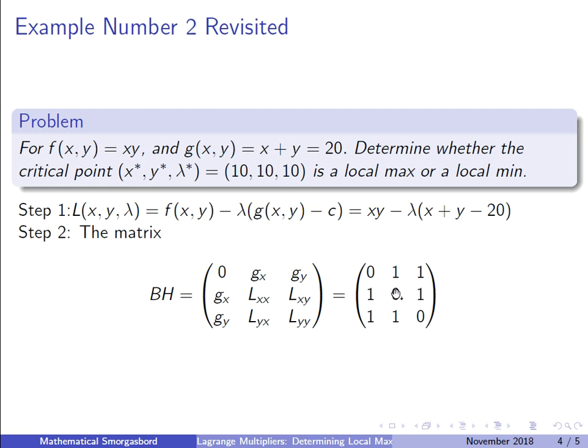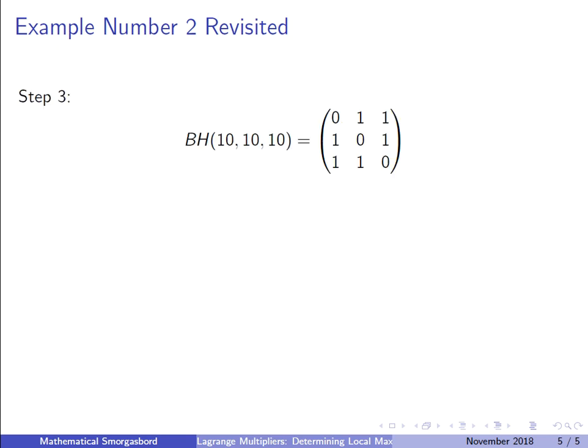Many times you'll get some function in terms of lambda, maybe over here and over here, so it won't always just be constants. Now step three: we actually evaluate this matrix at the point (10, 10, 10). What I mean is you treat each of these as if they were functions, and then you plug in the point (10, 10, 10). But in this case, because they're all constants, plugging in the point (10, 10, 10) doesn't change your matrix.